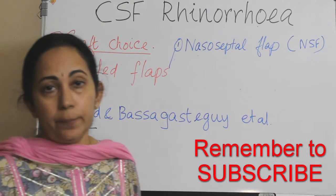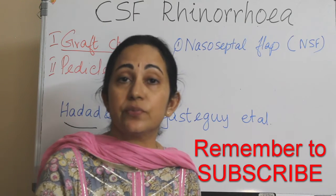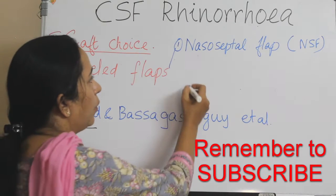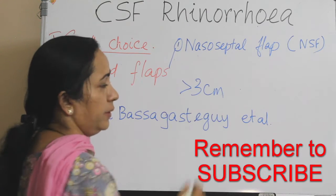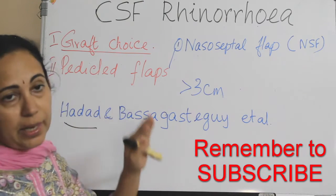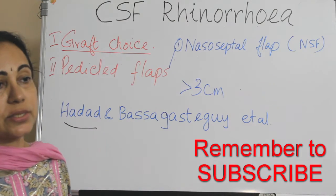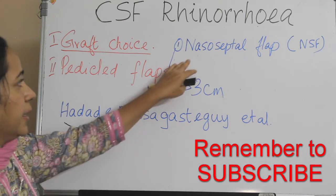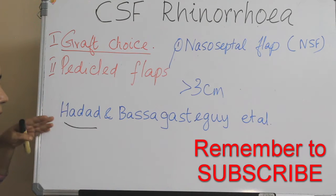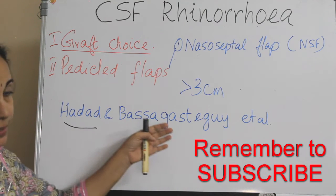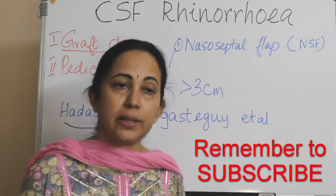A combined approach can also be used. Over the graft, especially if the defect is very wide — more than 3 cm — pedicle flaps are kept over the graft. The workhorse in the reconstruction of skull base defects is the nasoseptal flap, popularly known as the Hadad flap, based on the posterior septal branch of the sphenopalatine artery.